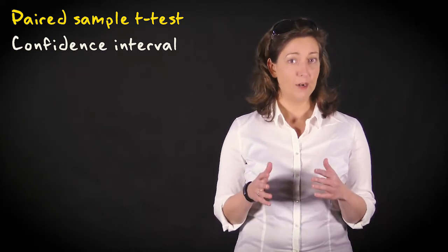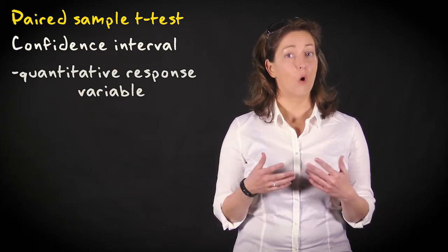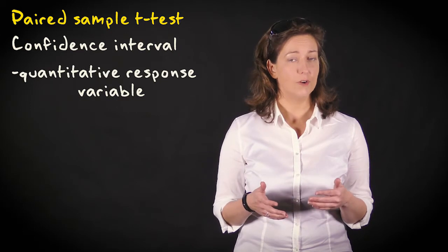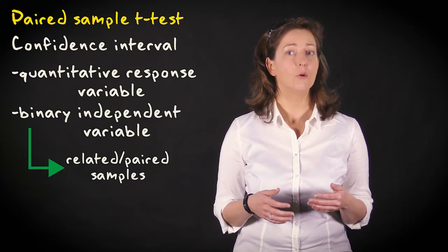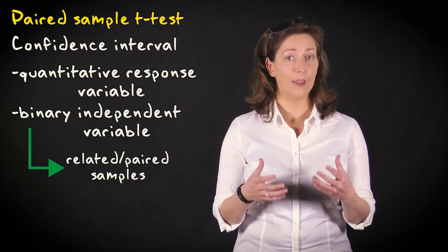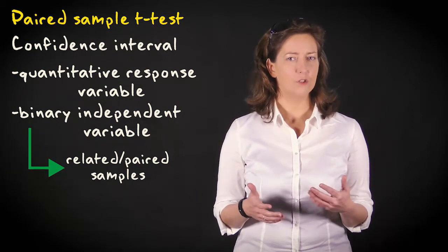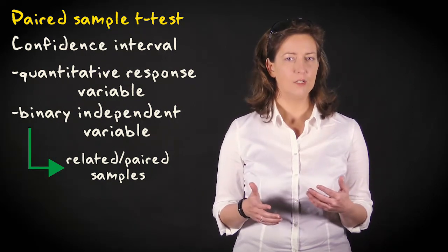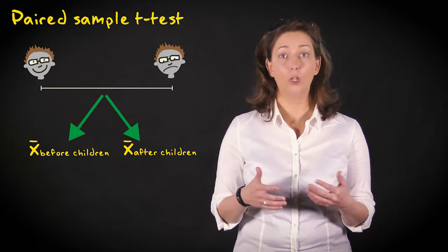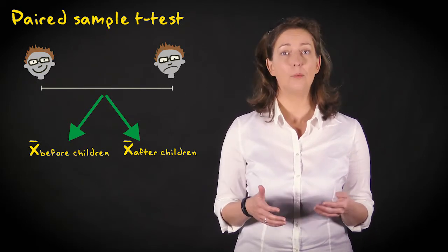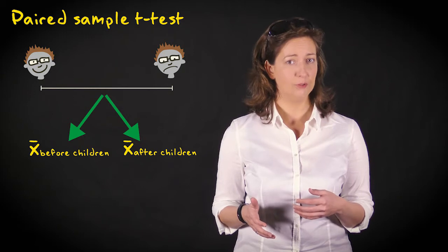We use a paired samples t-test or confidence interval if we have a quantitative response variable and a binary independent variable that distinguishes two paired samples. An example of a research question is: does the mean score on a happiness scale become lower after people have children versus the mean score before they had children?